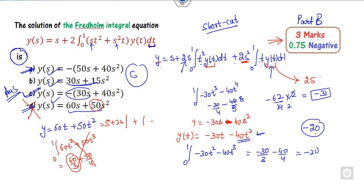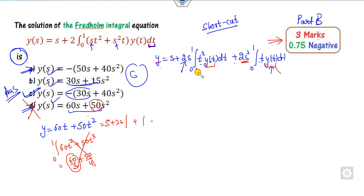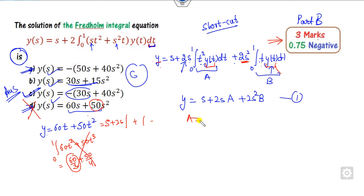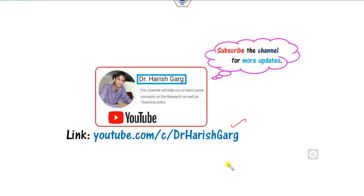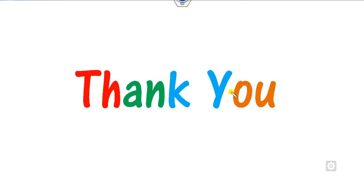You can also solve the first problem using an alternative method: consider the integral parts as variables a and b, so y = s + 2as, then substitute y back to get two equations in a and b and solve. However, that is a lengthy procedure, so the shortcut substitution method is faster. In the next lecture we will see more questions. Please subscribe the channel and share this video with your friends. Best of luck, students — thank you.